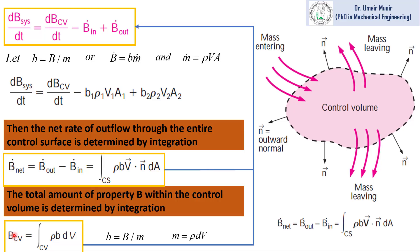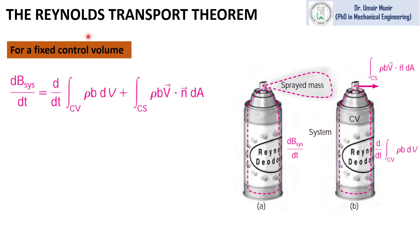After back-substituting these two values into the equation, we obtain the Reynolds Transport Theorem in this form. This is the Reynolds Transport Theorem in its final form, obtained after back-substituting the equations from the previous steps.